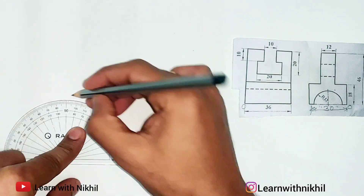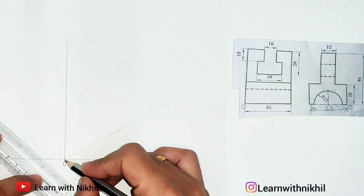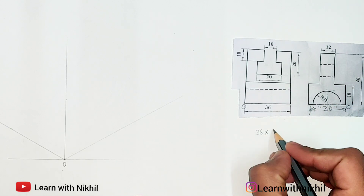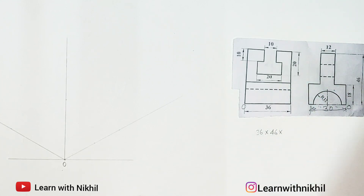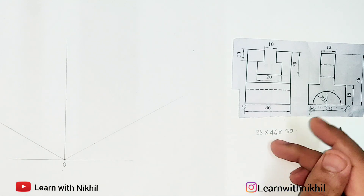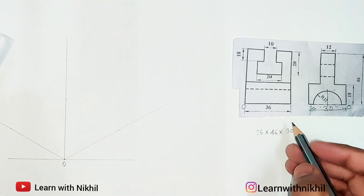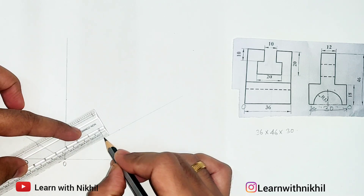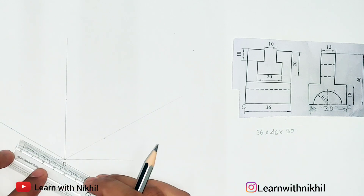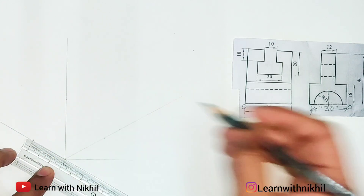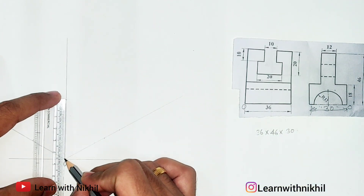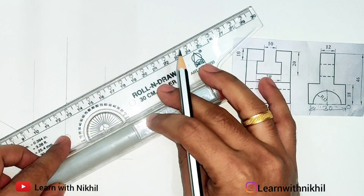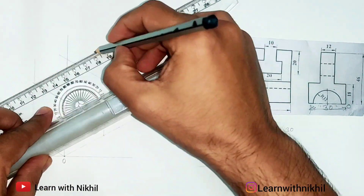First we will draw the axis — 30 degree, 30 degree, 90 degree angle — drawing light lines through it. Now calculating the total three dimensions: this is 36, the height is 46, and the depth is 30. Using these three dimensions we will draw the rectangular box in which our isometric figure will be. Draw the parallel lines properly to get the exact dimensions. The advantage of creating a rectangular box is that our whole isometric figure will be inside it.